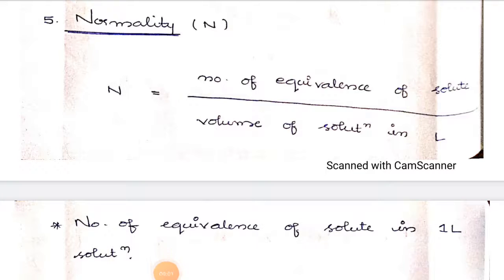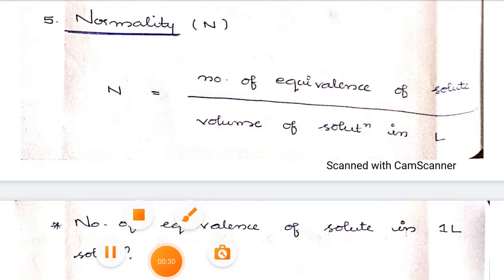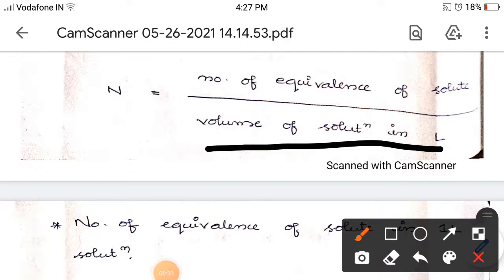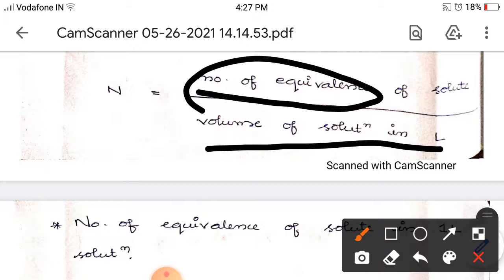Hi students, today we are discussing the last topic of the section, that is normality. Normality means the number of equivalents of solute — we are discussing equivalents later — divided by the volume of solution in liters. The denominator is the same as molarity, but here we use number of equivalents of solute instead of moles.